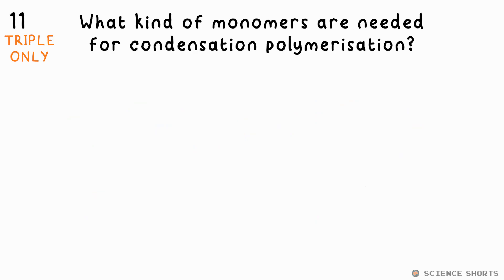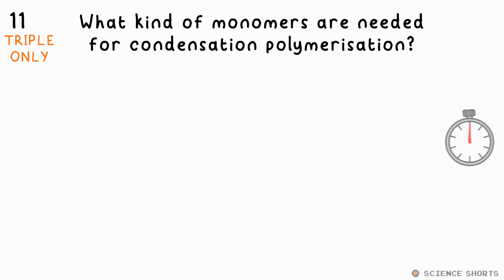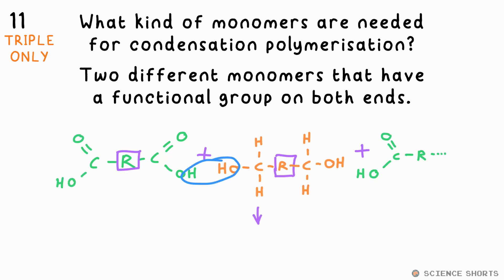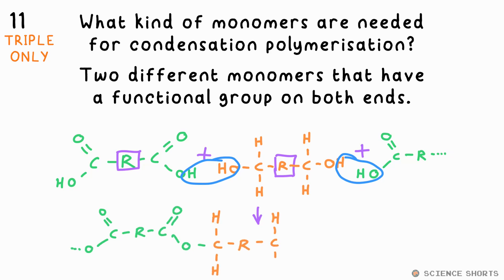What kind of monomers are needed for condensation polymerization? You need two different types of monomers that have functional groups on both sides of the molecule. For example, an alcohol with two OH groups and a carboxylic acid with two COOH groups. The ester-forming reaction happens on both ends of these molecules to make a polymer — this would be a polyester in this case.